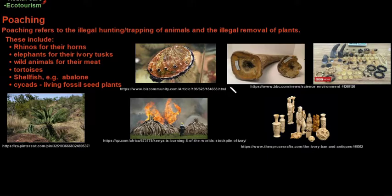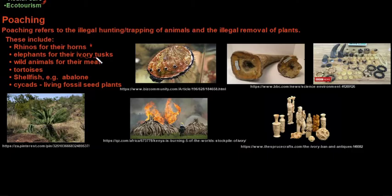Poaching is a major problem affecting biodiversity in South Africa. Poaching refers to the illegal hunting or trapping of animals and the illegal removal of plants. This includes rhinos poached for their horns — one of the biggest problems in South Africa — and elephant poaching for ivory tusks, though this is a greater problem in countries like Kenya, where ivory has even been destroyed to take it off the market.